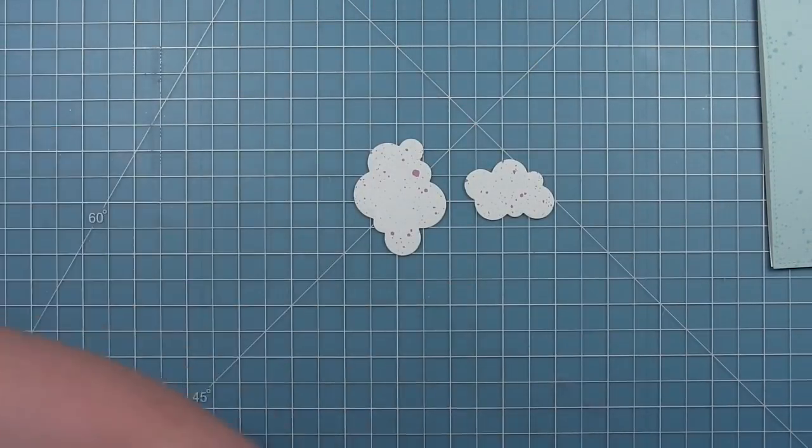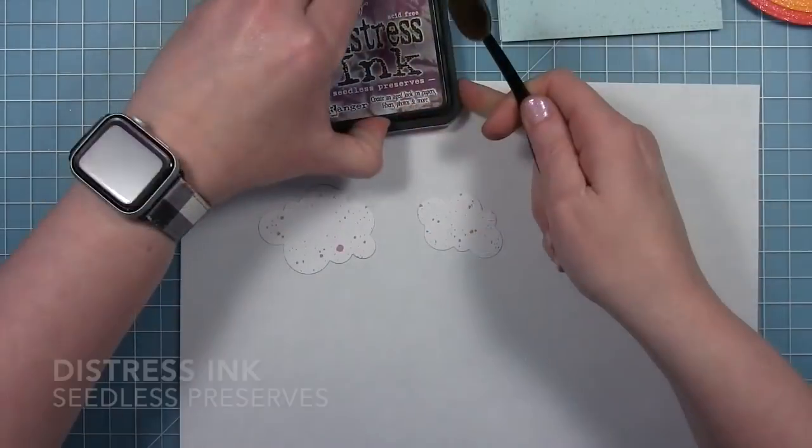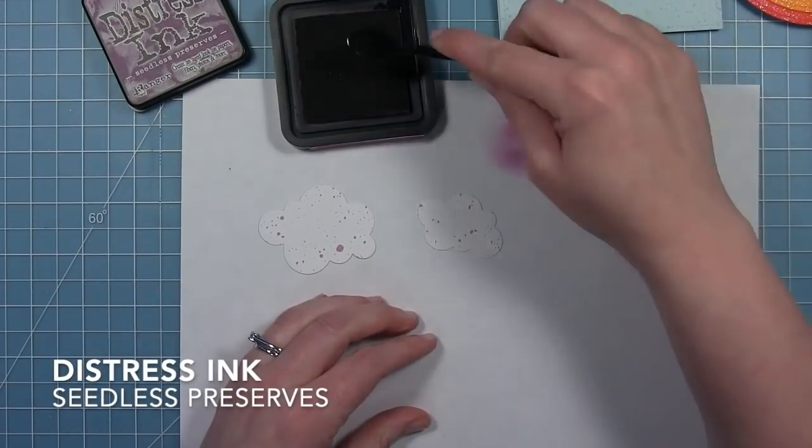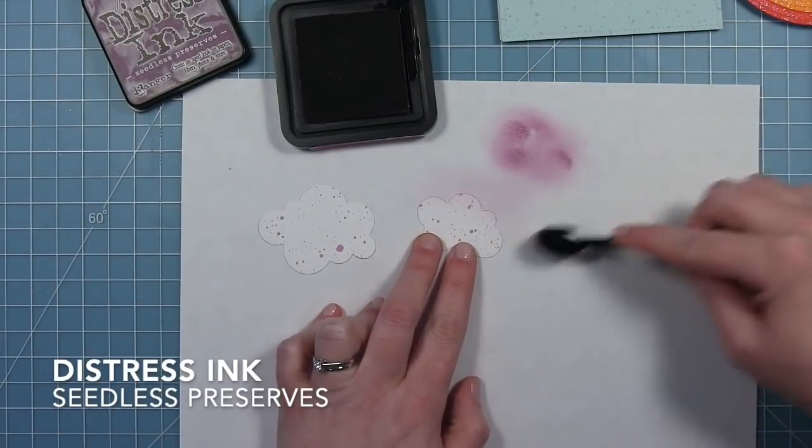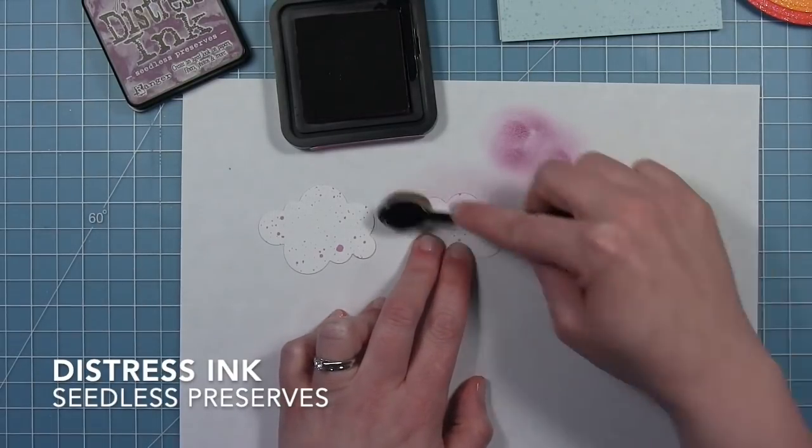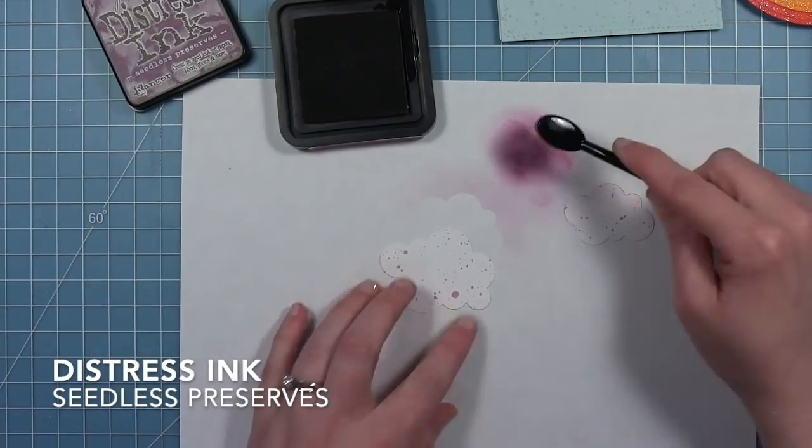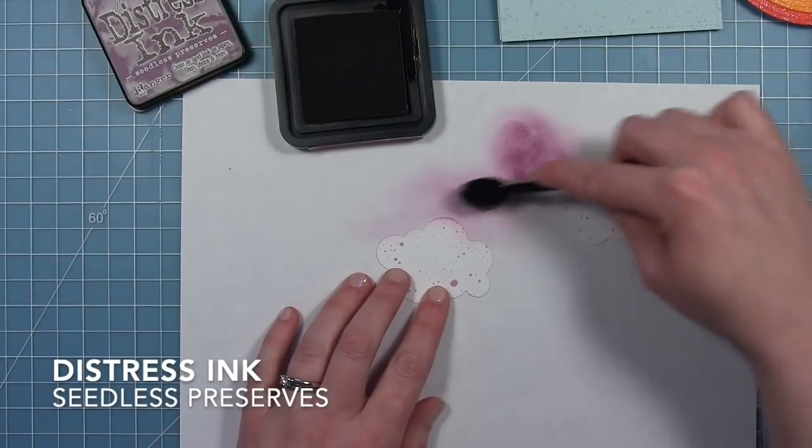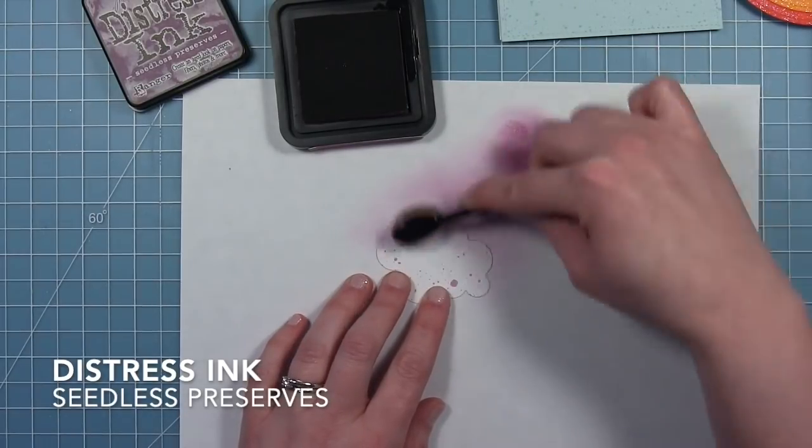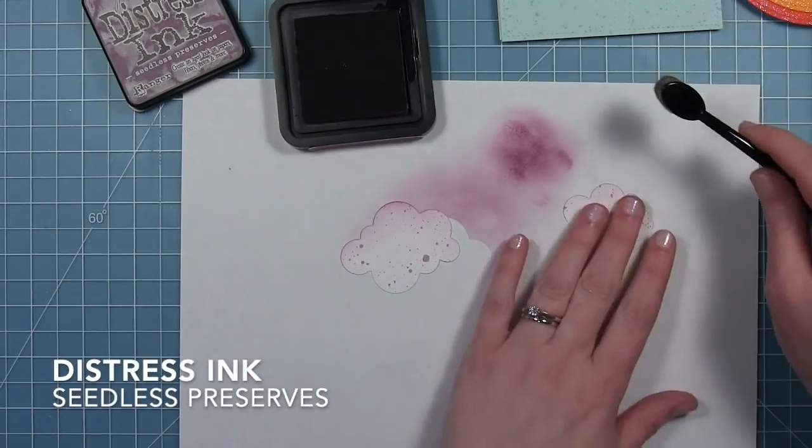I also used some simple puffy clouds and I cut out some of the same spiffy speckles. This is the purple but it's the white with the purple specks. I'm using a little bit of seedless preserves to kind of just give the top of those just a little bit of color and a little bit of definition so they stand out from each other and it just doesn't look like a big white blob at the bottom of my rainbow.